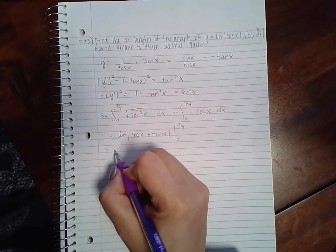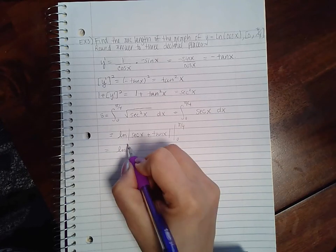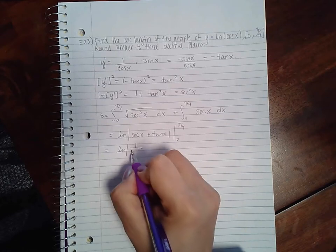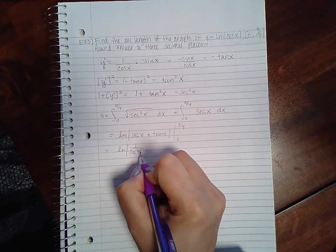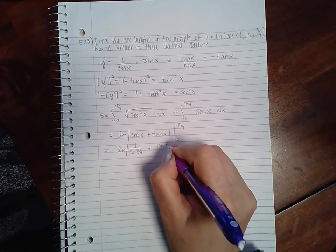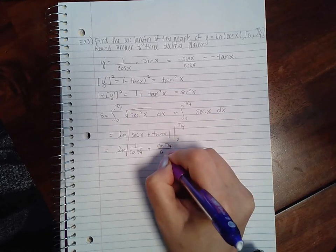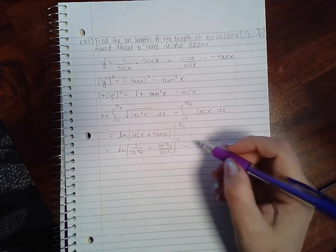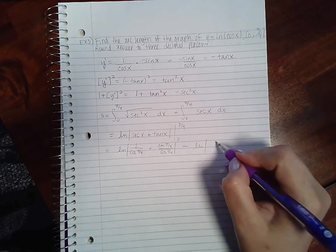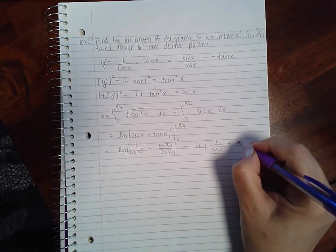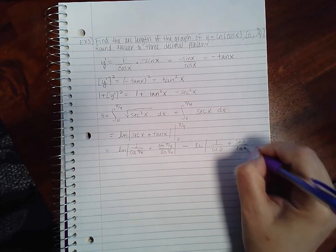So we get the ln of sec(π/4) which is 1 over cos(π/4) plus tan which is sin(π/4) over cos(π/4) minus the ln of 1 over cos(0) plus sin(0) over cos(0).